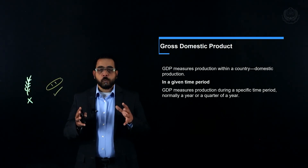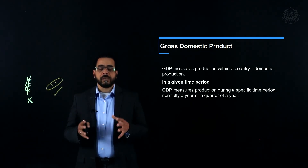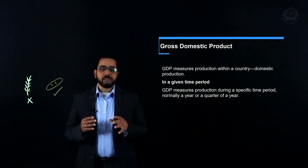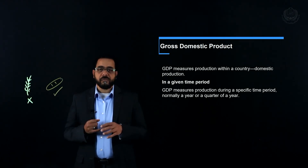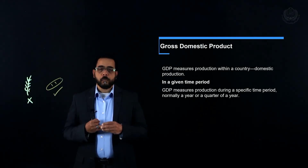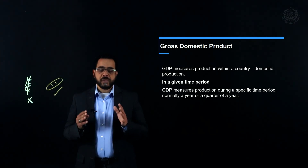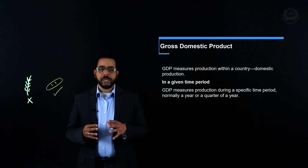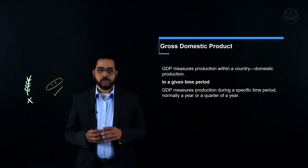GDP is one of the main economic indicators for a country. It calculates the value of final goods and services produced within the country in a given time period. This concludes our first unit. Now let's move to our second unit, talking about how we calculate GDP — what equation do we use to calculate it.